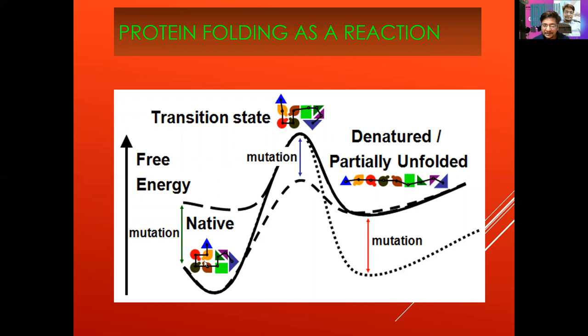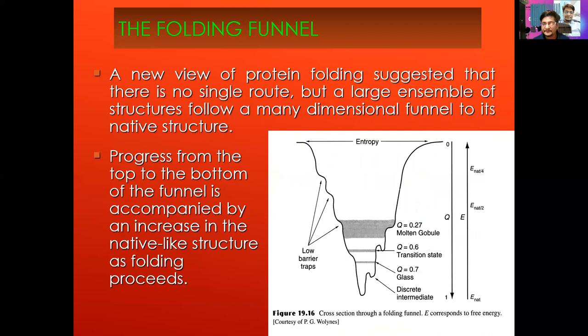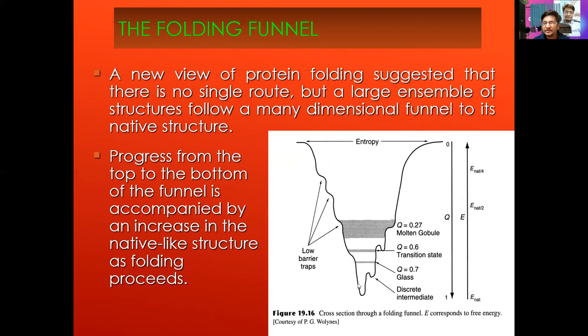Protein folding can be seen as a reaction where the native structure has minimum free energy. When mutations occur, the protein may go to a transition state, becoming partially folded, denatured, or misfolded — which can lead to several diseases including Alzheimer's. This is explained by the folding funnel: at the top there is high entropy with many conformations, and at the bottom the protein is fully folded with minimum entropy.